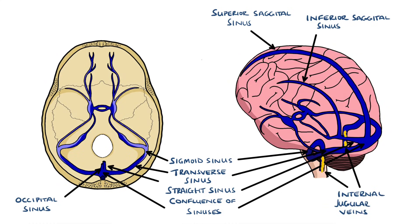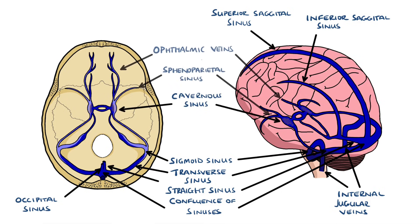For completeness, there are also the cavernous sinuses, found on each side of the sella turcica, and these receive blood from the ophthalmic veins, the hypophyseal vein, and sphenoparietal sinuses.